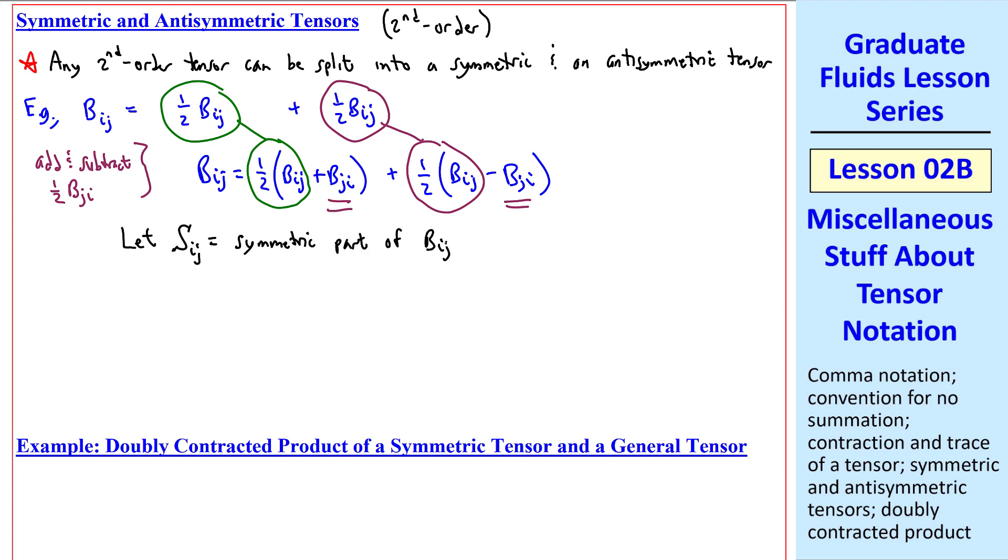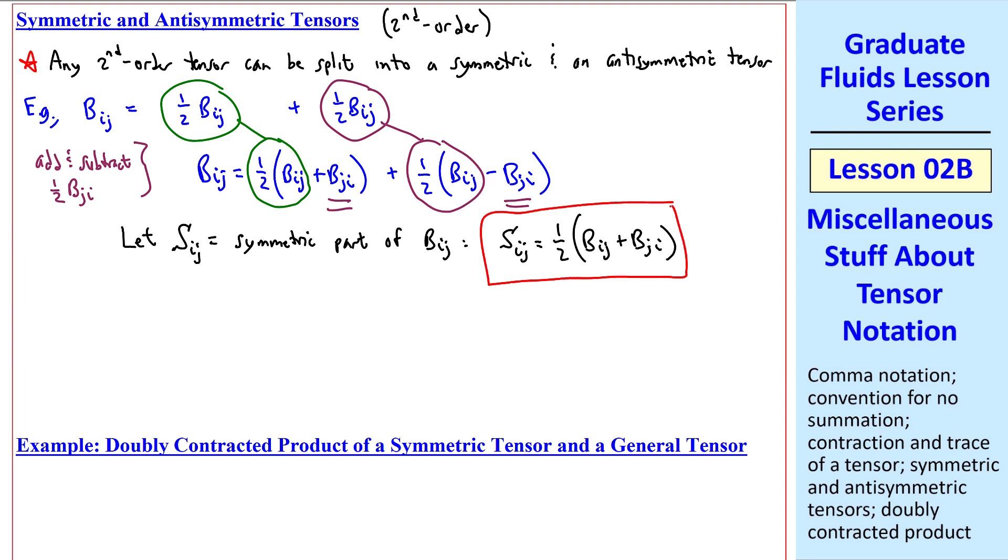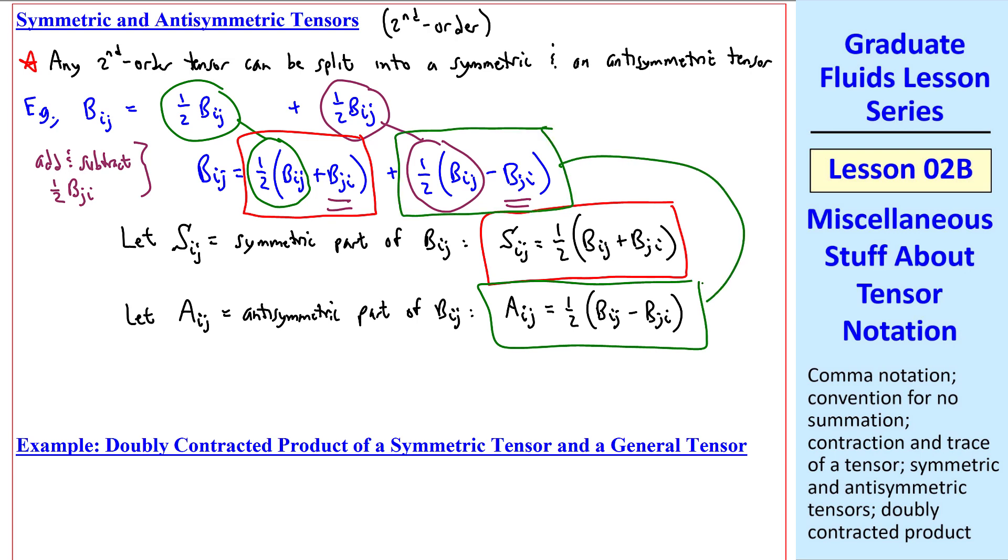Let capital Sij be the symmetric part of bij, which is one-half bij plus bji. In other words, this grouping of terms. Similarly, let aij be the antisymmetric part of bij. aij is thus one-half bij minus bji, which is this second grouping of terms. So bij can be expressed as Sij plus aij.